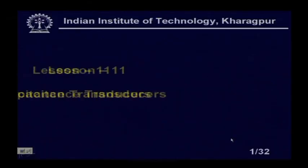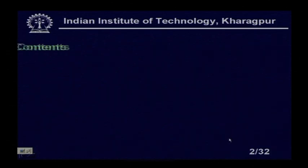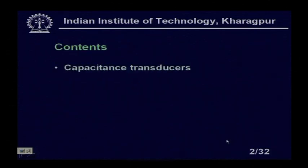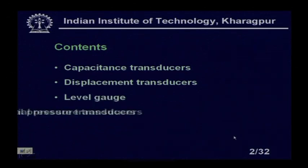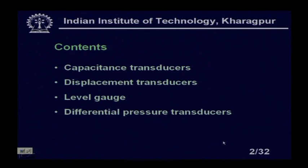This is lesson 11 of industrial instrumentation. In this lesson, we will study the capacitive transducers. The contents include capacitance transducers as a whole, displacement transducers, and the basic principle of the sensor. Capacitance transducers are used as displacement transducers, level gauges or level sensors for both liquid and solid, differential pressure transducers, and their use in flow measurements. The DPT or differential pressure transmitter is basically a differential capacitive transducer.